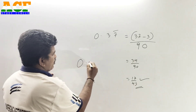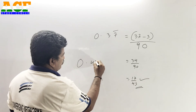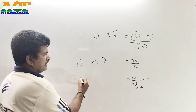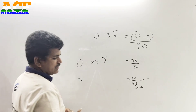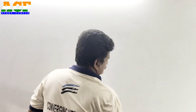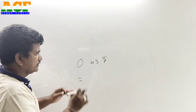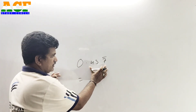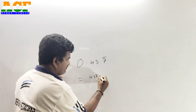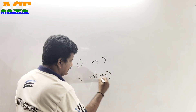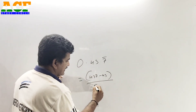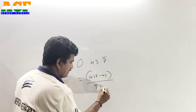Suppose 0.437 under bar. The total decimal is a 3-digit number. The numerator is 437 minus 43, divided by 900 — one digit has a bar, so we use one 9, and two digits are without a bar, so we use two zeros.